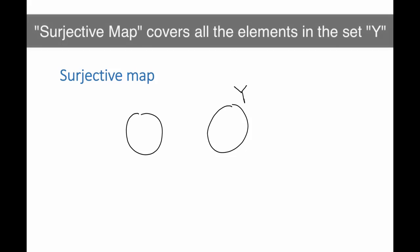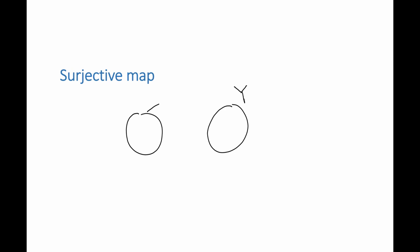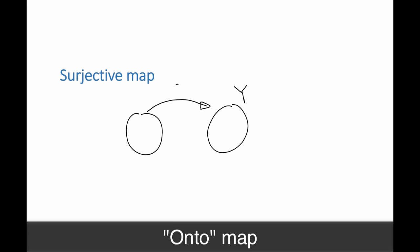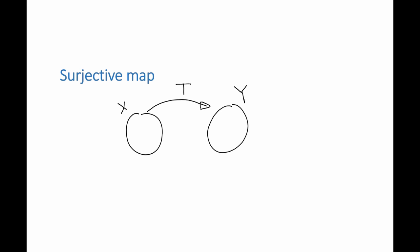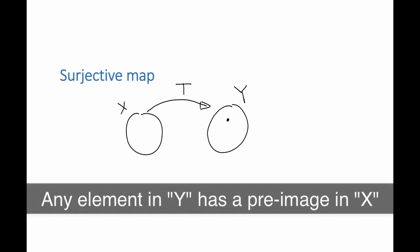The next type of maps is the surjective maps. The surjective maps covers all the elements in the set y. So the surjective map or the onto map is such that any element in y has to have a pre-image in x.